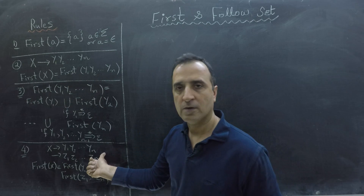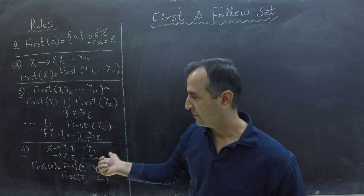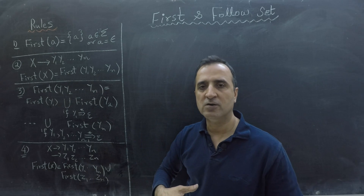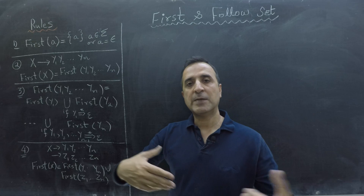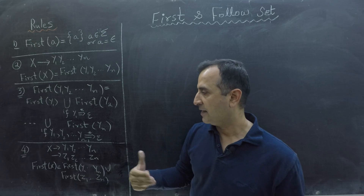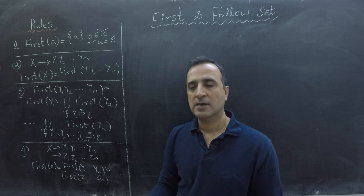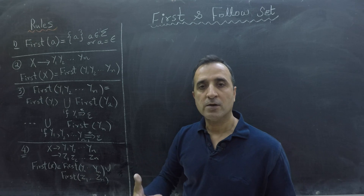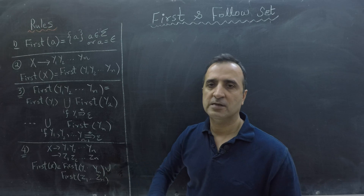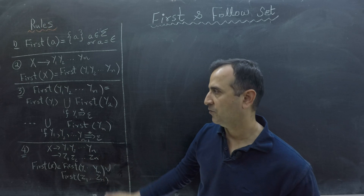Let's go to rule number four before we discuss rule number three. Rule number four says that if a non-terminal has multiple productions, then First of that non-terminal is the union of First of all of its productions' right-hand sides. That's rule number four.